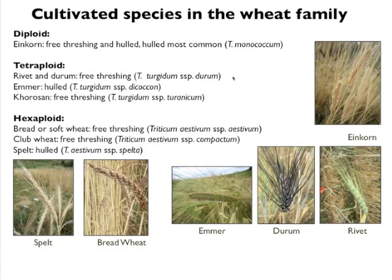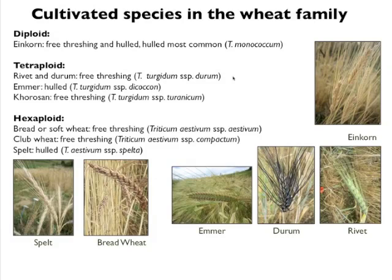I don't want to get into the technical details too much on ploidy, but it's important to understand how these species are related. Diploid species are like humans — we have two sets of chromosomes, one from each parent. Tetraploid species have four sets and hexaploid species have six sets. Polyploid species can occur when there's a hybridization between two species with related but not identical genomes, and the offspring can keep both genomes, going from diploid to tetraploid to hexaploid.